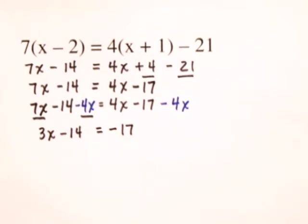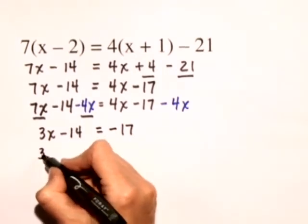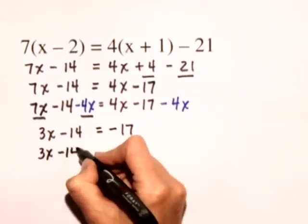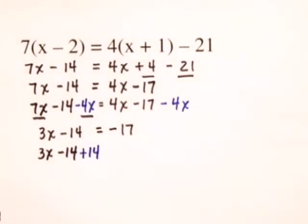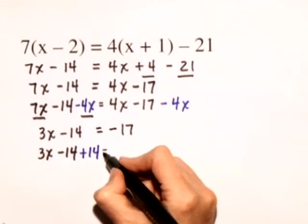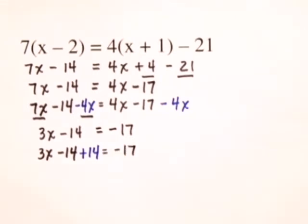Next, we're going to add 14 to both sides of this equation and we'll have 3x minus 14 plus 14 is equal to negative 17 plus 14.